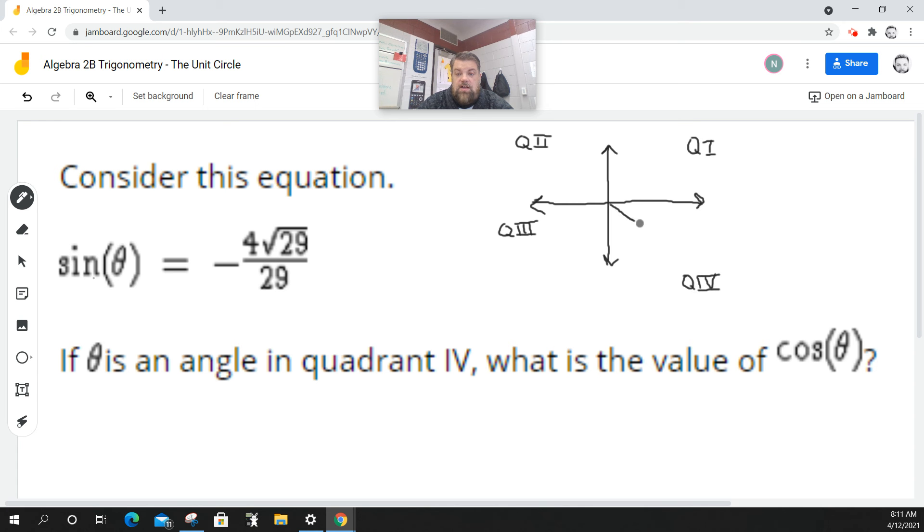So we have a right triangle that sort of looks like this. And this is where theta is. So this would be what we consider to be the opposite. This is the adjacent. And this is the hypotenuse.